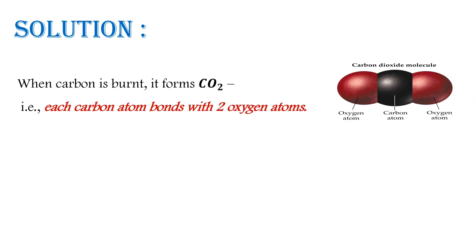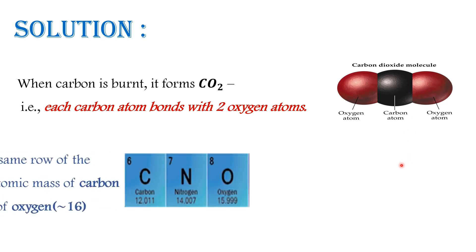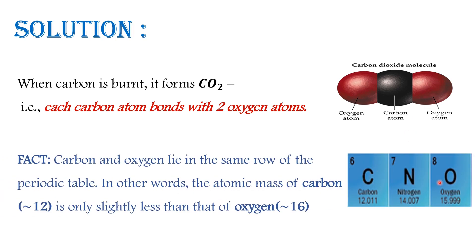Solution: When carbon is burned, it forms carbon dioxide, i.e., each carbon atom bonds with two oxygen atoms. We know that carbon and oxygen lie in the same row of the periodic table. In other words, the atomic mass of carbon, which is approximately 12, is only slightly less than that of oxygen, which is approximately 16.